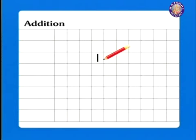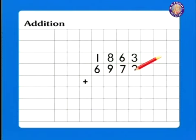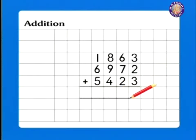What is the answer to 1,863 plus 6,972 plus 5,423? Perhaps you're working out the answer even as we speak. You can pause the section here to work it out on your own on a piece of paper if you wish. And the answer is... Okay, now.